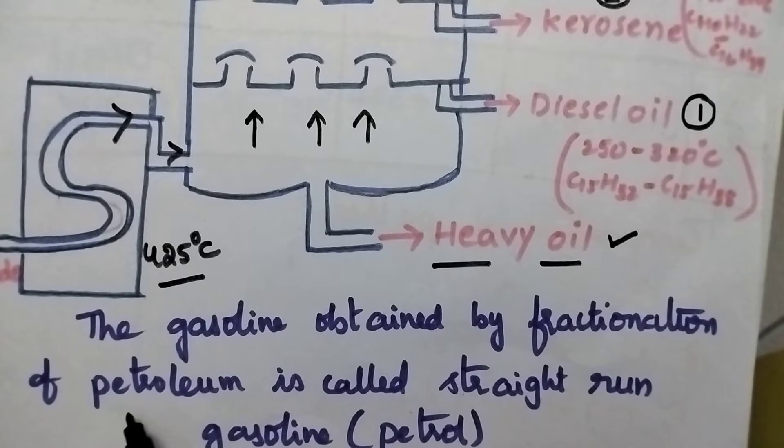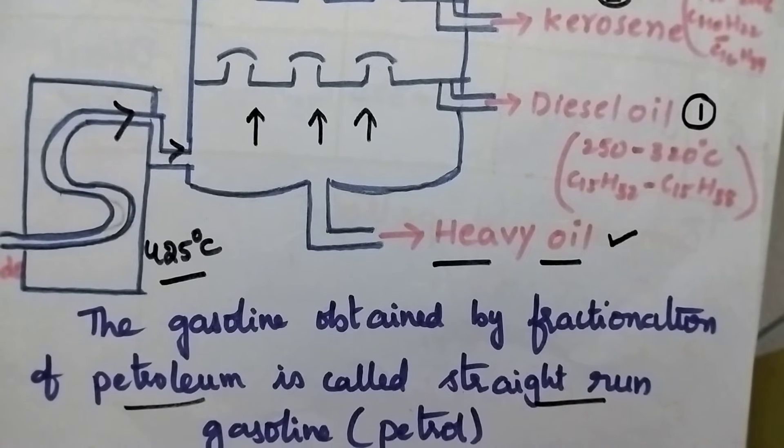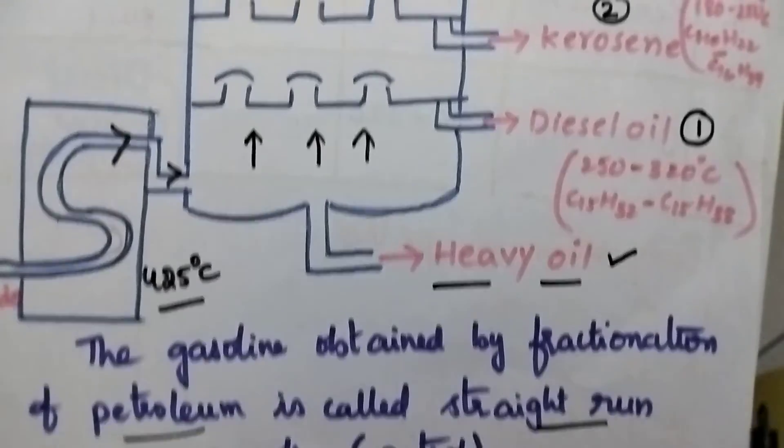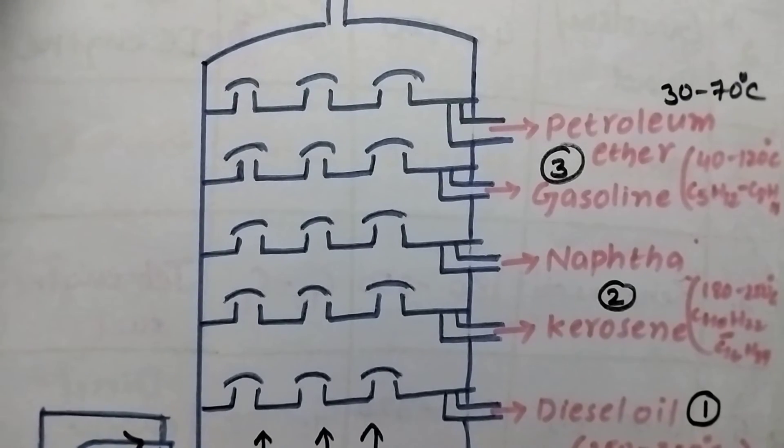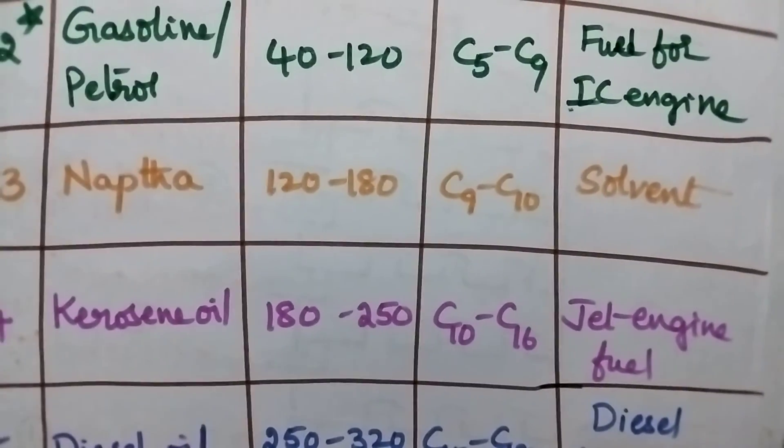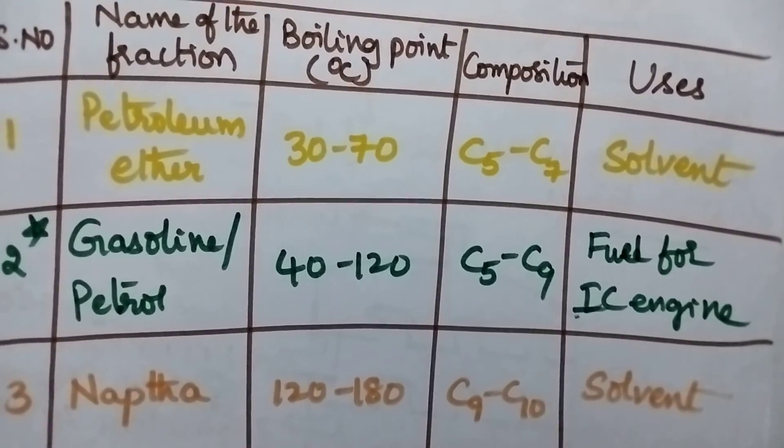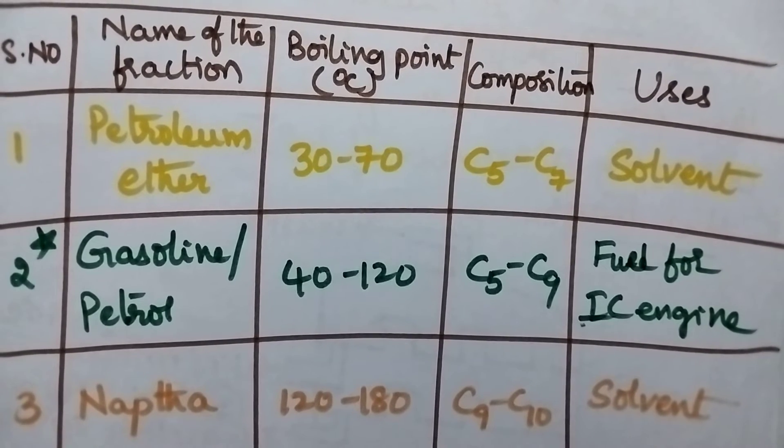The gasoline that is obtained by the fractionation of petroleum is called the straight run gasoline or petrol. Let us see what are the different fractions obtained through the fractional distillation of crude oil based upon the number of carbon atoms present in the fraction along with the boiling point.